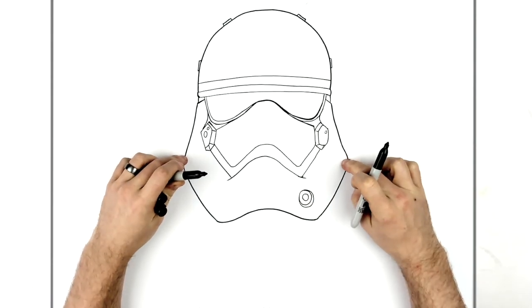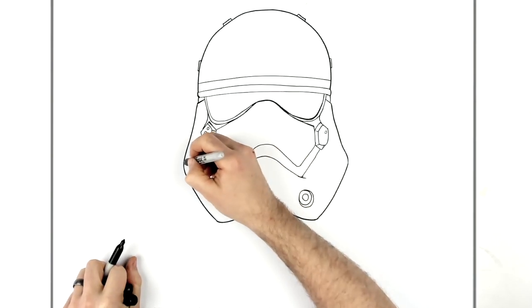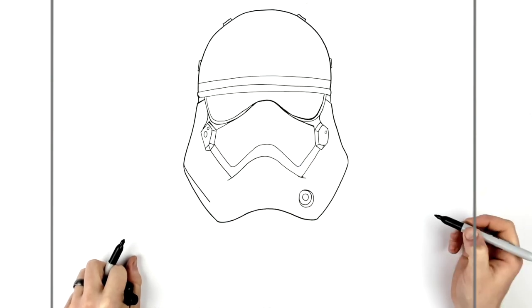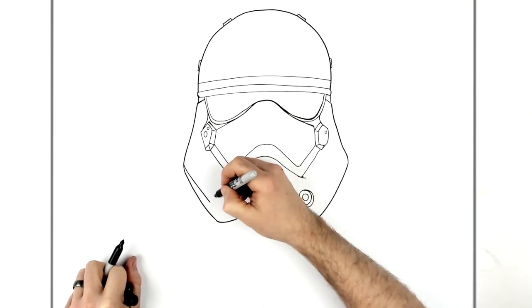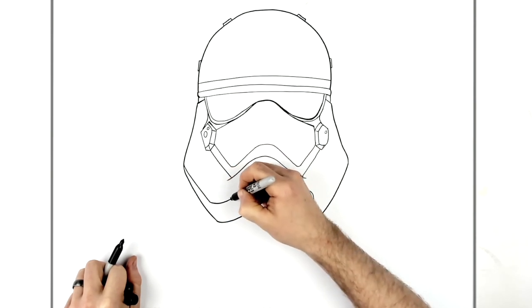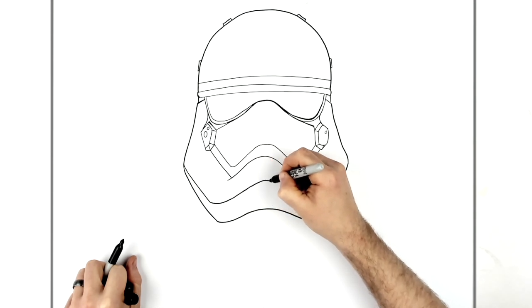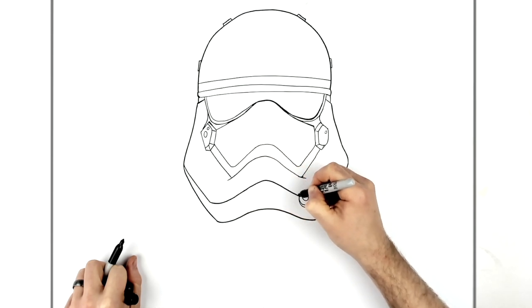And then we have some more lines for his mouth, so it goes down this way, and then around here, to there.